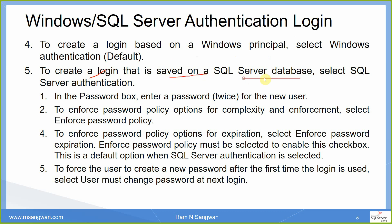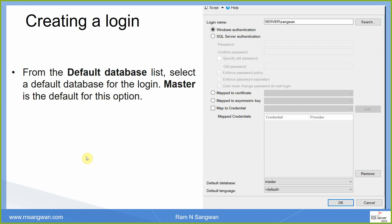To create a login that is saved in the SQL Server database, select SQL Server Authentication. In the password field, enter the password. To enforce the policy, select the other policy options. From the Default Database list, you can select the database to which this user will be placed — Master database is selected by default.